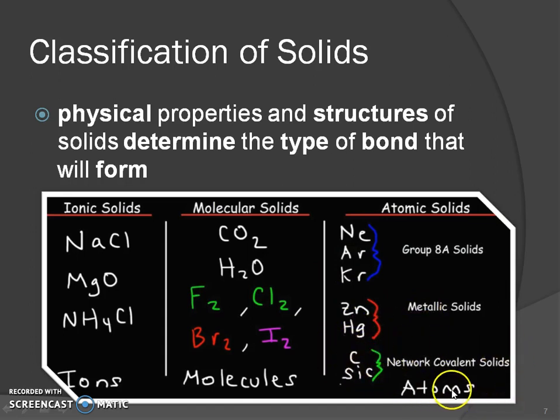The new type is network covalent solids. It gets a little tricky because some network covalent solids are atoms and some are molecules, but together they form a gigantic molecule — kind of like holding hands, like water. Water holds hands through strong hydrogen bonds, creating surface tension. Network covalent solids are structured in a way that gives them different properties than your normal molecular solid.